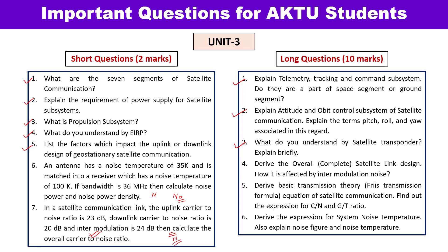For satellite transponders, explain the function: it receives, modifies, performs frequency conversion, and then retransmits. There are two types — single conversion and double conversion — and you need to explain both. Then there is a derivation for complete satellite link design, which is the derivation for C/N. Also study the Friis transmission equation derivation — derive the equation for power received (Pᵣ) and express it in dB form. Derive the carrier-to-noise ratio and G/T ratio, which is the figure of merit specifying the quality of the satellite.